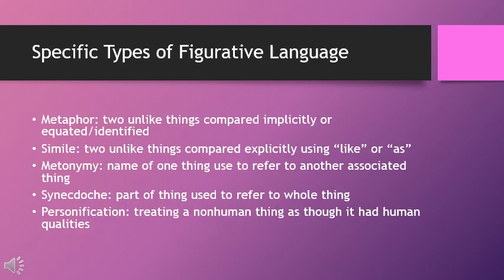A few specific types of figurative language we will be discussing this semester: a metaphor — the primary one most familiar — is two unlike things compared implicitly, without stating that they're being compared, or two unlike things equated or identified with one another. A simile is very similar to a metaphor — two unlike things compared, but compared explicitly using the words 'like' or 'as.' In future lectures, we'll talk about how metaphors and similes work.